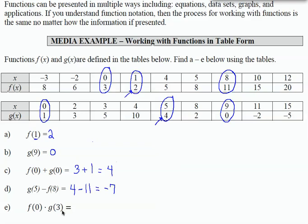For the last one then, f of 0 times g of 3. Well, we know that f of 0 is 3. We've already worked with that particular result. Times, now, I'm looking in function g for an input of 3. I found it here. The output is 5. 3 times 5 is my result of 15.